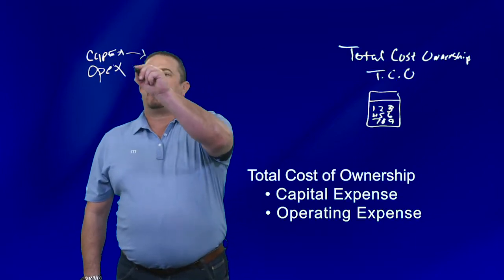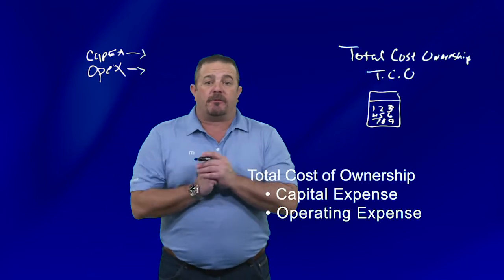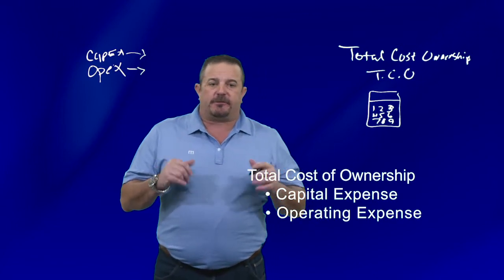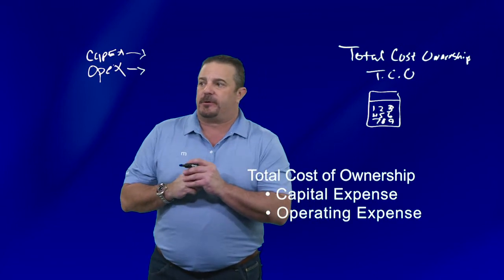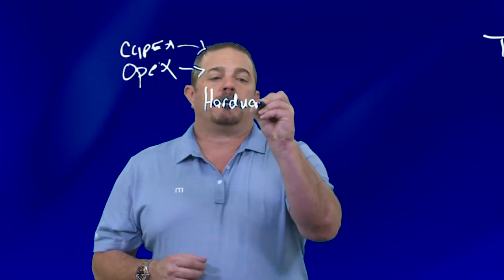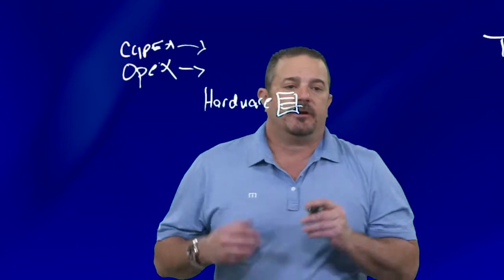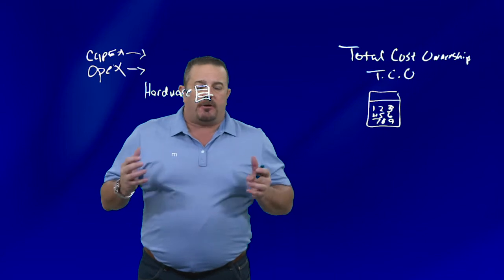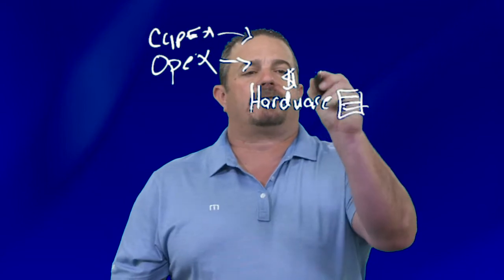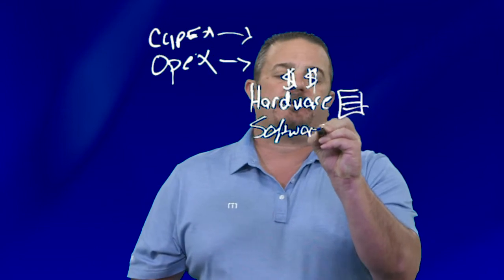When you look at going from a capex to an opex model, you want to know what's my total cost of ownership here versus there. This is where a lot of our sellers can get in trouble. When they go to gather information from the customer, they ask: what's it going to cost for your hardware — your servers, SANs, NASes, firewalls, all that good stuff?